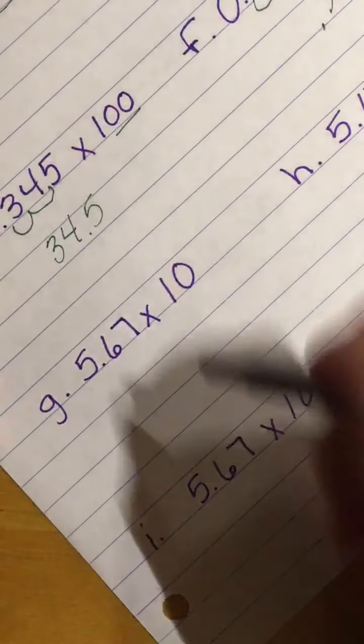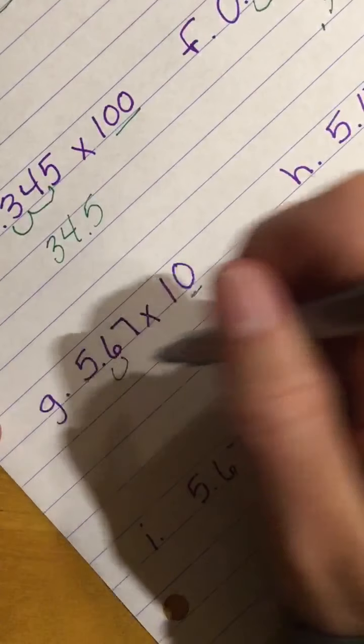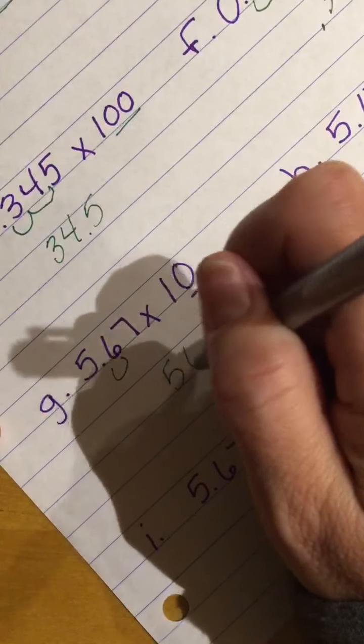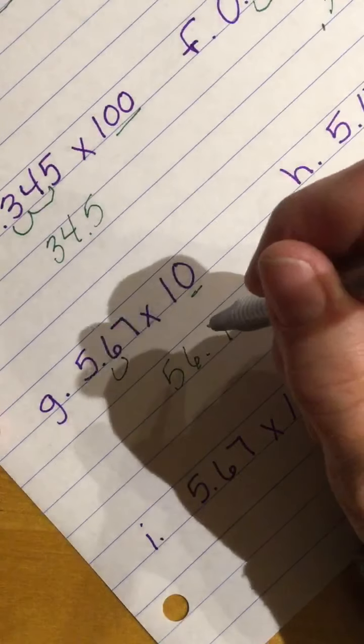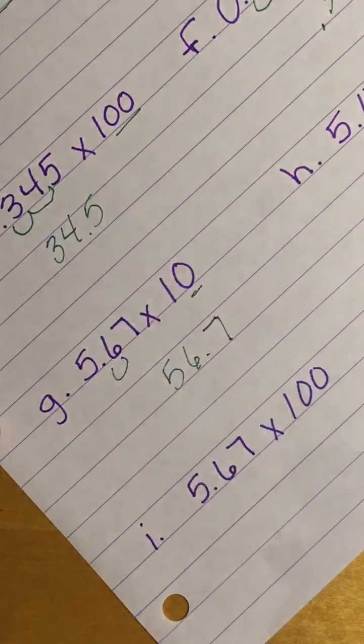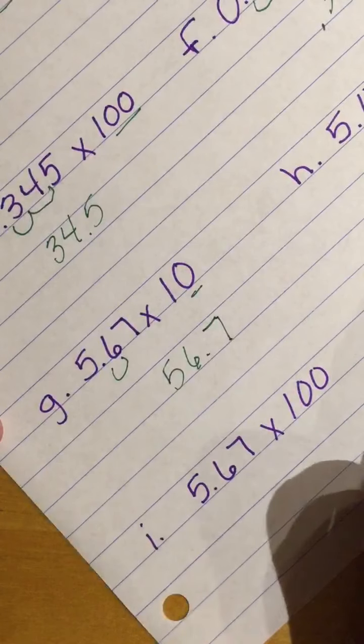Here we go. One 0, one place. I'm going to have 56 and 7 tenths. I moved my decimal one place.